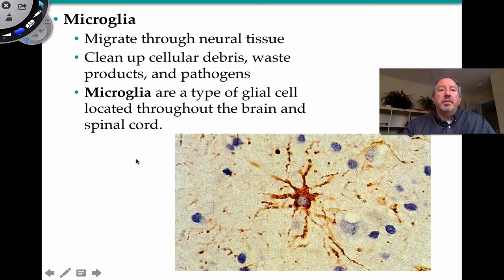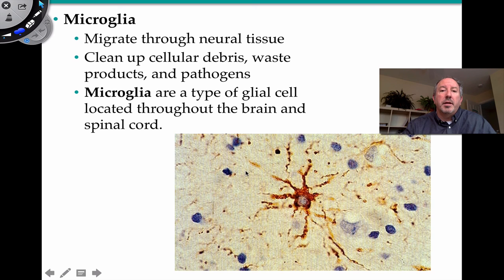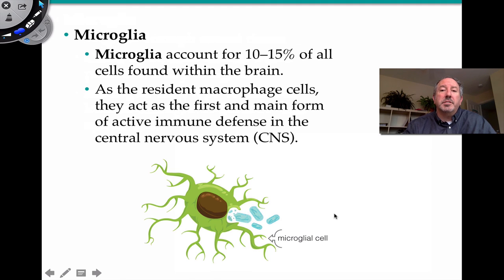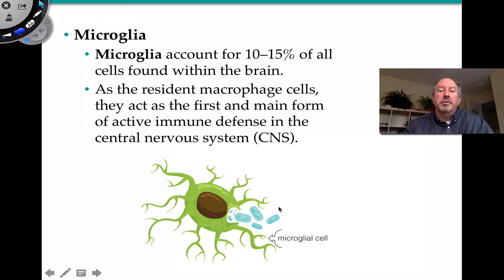Microglia migrate throughout the nervous tissue of the central nervous system. Their function is supportive: they clean up waste in the interstitial fluid and destroy pathogens like bacteria that might cause difficulty. They're a type of glia cell in the brain and spinal cord that helps to defend — essentially the resident macrophage, meaning the big eater. They account for 10 to 15% of cells found within the brain and are the main form of immunity in the central nervous system.